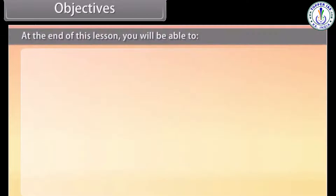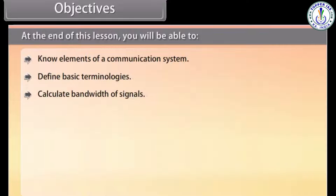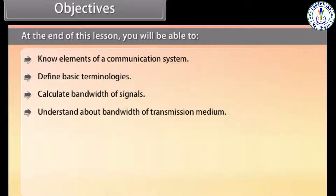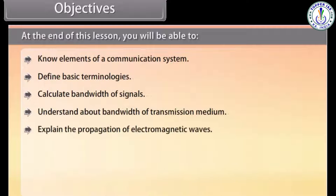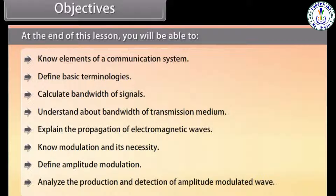At the end of this lesson, you will be able to: know elements of a communication system; define basic terminologies; calculate bandwidths of signals; understand about bandwidth of transmission medium; explain the propagation of electromagnetic waves; know modulation and its necessity; define amplitude modulation; and analyze the production and detection of amplitude modulated waves.